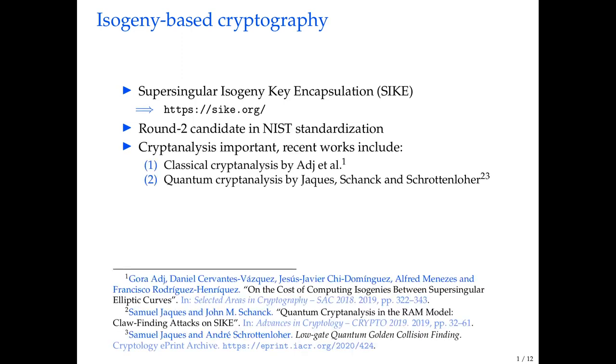I want to highlight the work on cryptanalysis that has been done on Psyc. First, the work by Adjie et al., who looked at classical cryptanalysis. Then the work by Jacques and Skank, initially and much more recently, a very recent e-print paper by Jacques and Schottenloer, who looked at quantum cryptanalysis. Interestingly for Psyc, from round one to round two, these works showed that the attacks that were considered to be practical were actually not as easy to execute as initially was thought, meaning that the security actually went up a bit, meaning that the parameters could be decreased and therefore resulting in smaller public keys, but also faster execution.